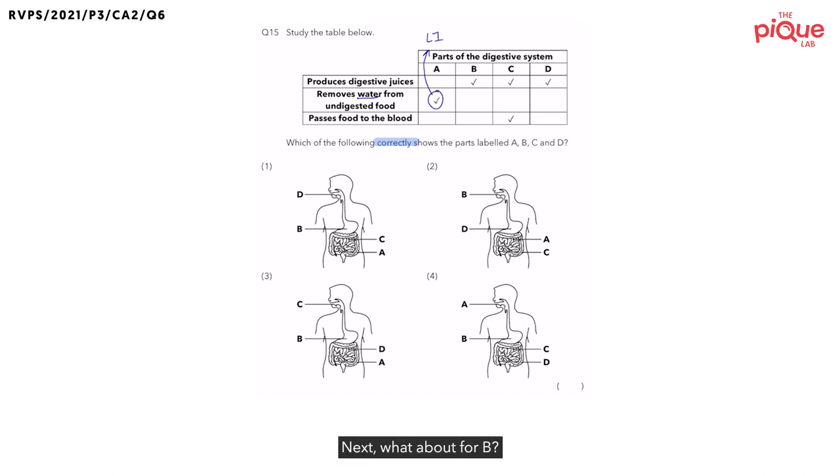Next, what about for B? If you look at B, you can see that it produces what? It produces digestive juices. Now, remember, what do digestive juices help to do? It helps to carry out what process? Digestion. So, I'm going to write this out. It helps to carry out digestion.